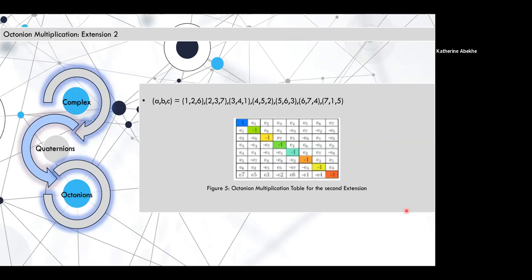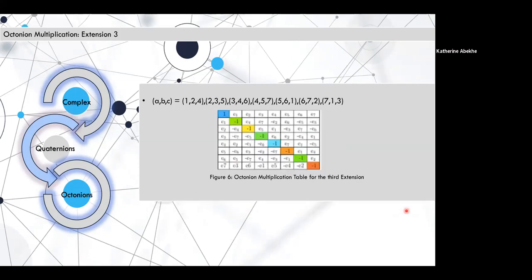Now extension two and extension three use cyclic multiplication to define these tables on cyclic multiplication modulo seven.